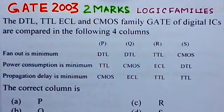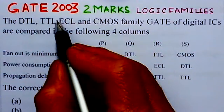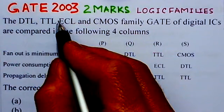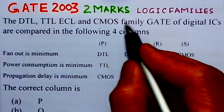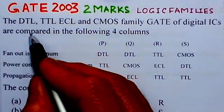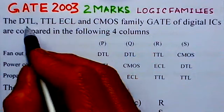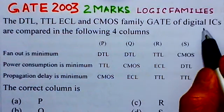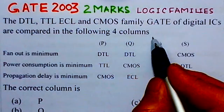This problem is the last in this set of six problems on logic families. It is from GATE 2003, worth two marks. We will read out the problem here. The DTL, TTL, ECL, and CMOS family gates of digital ICs are compared in the following four columns.